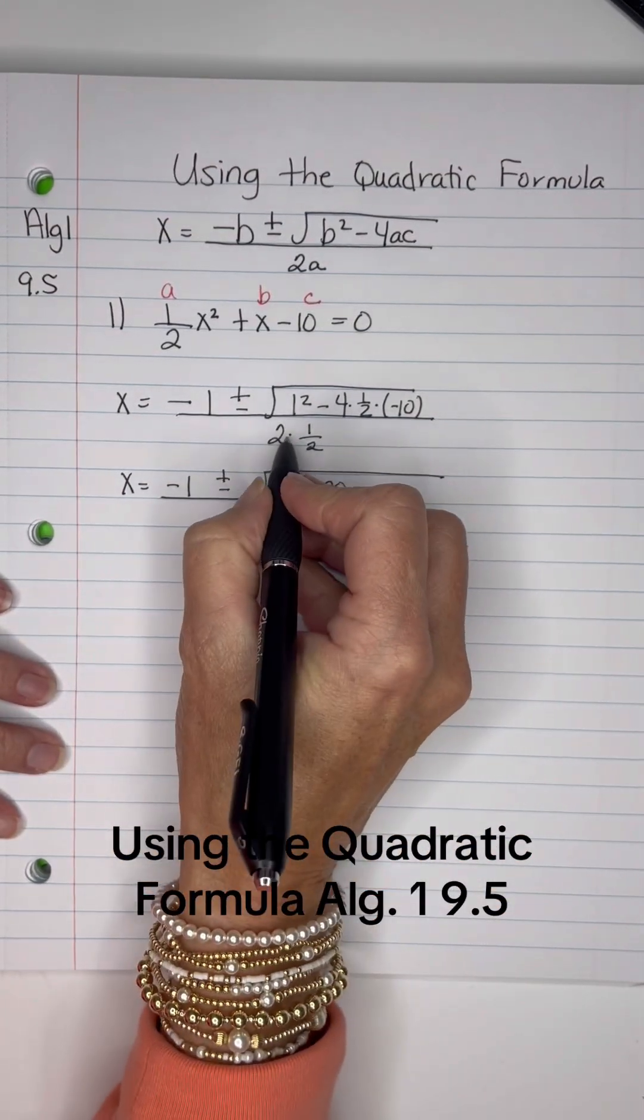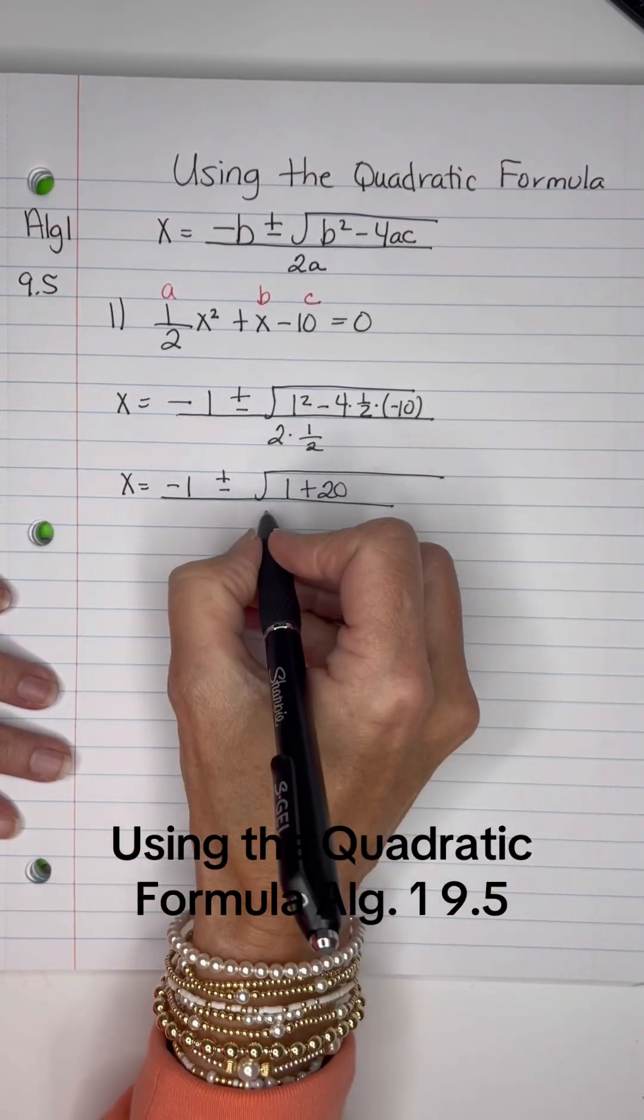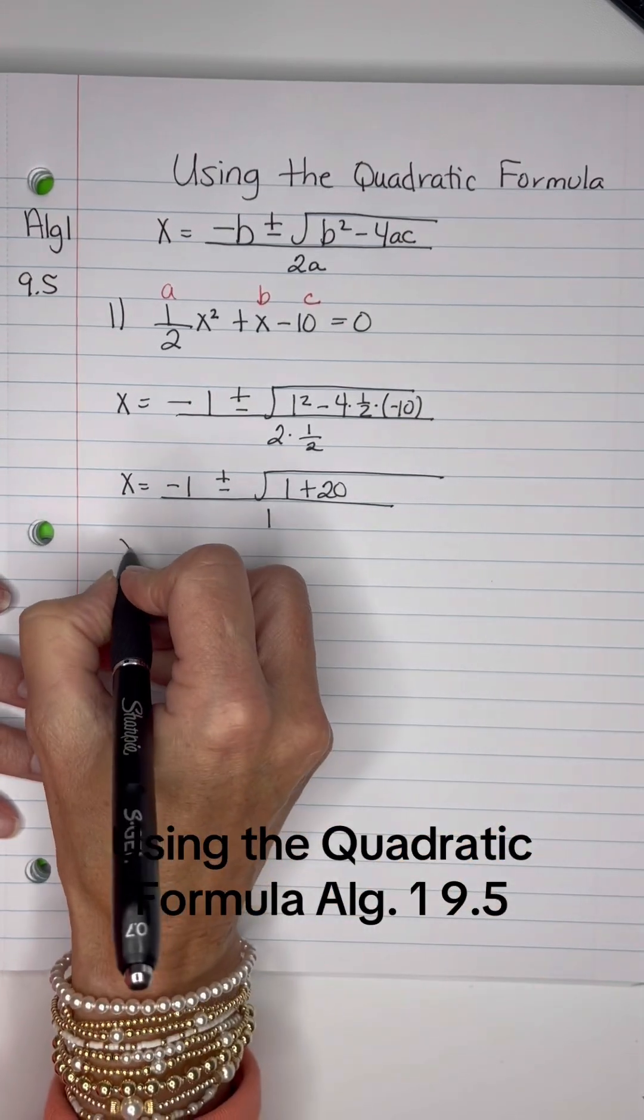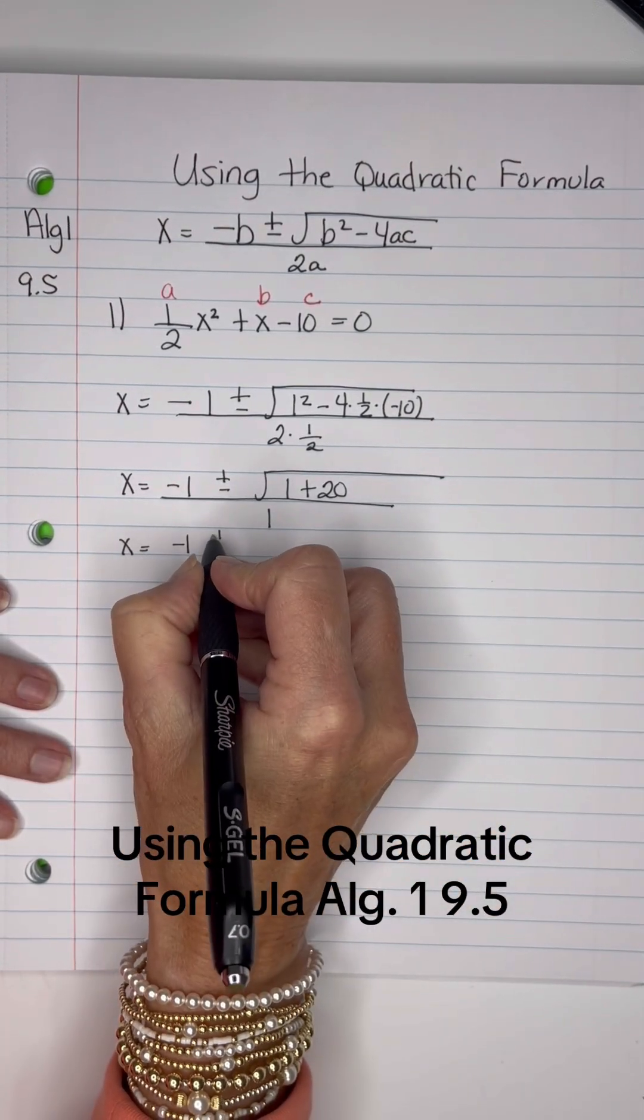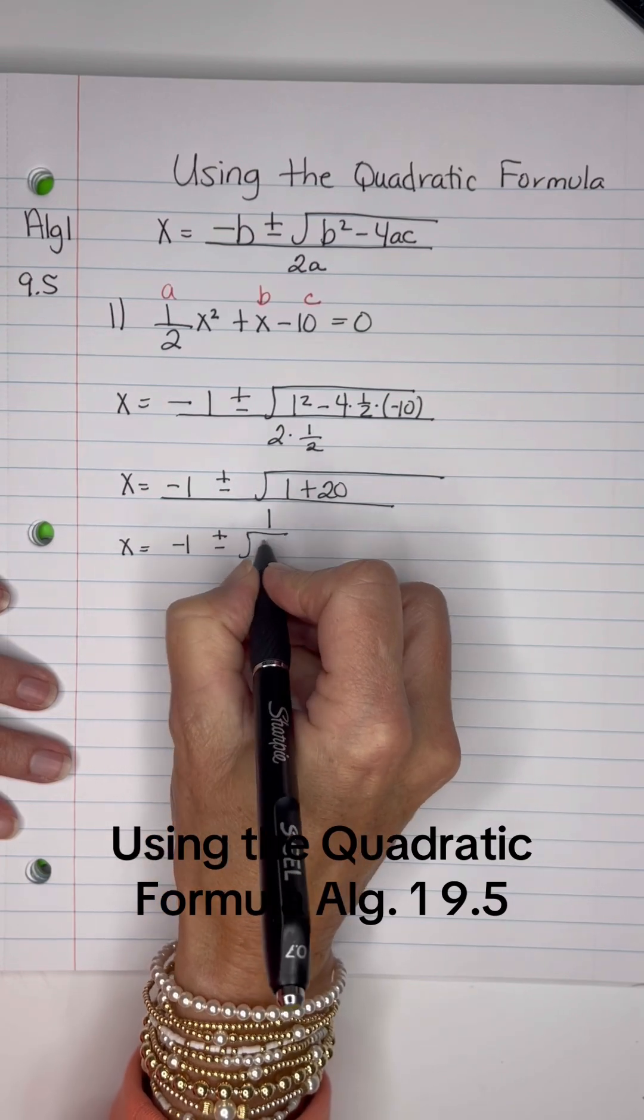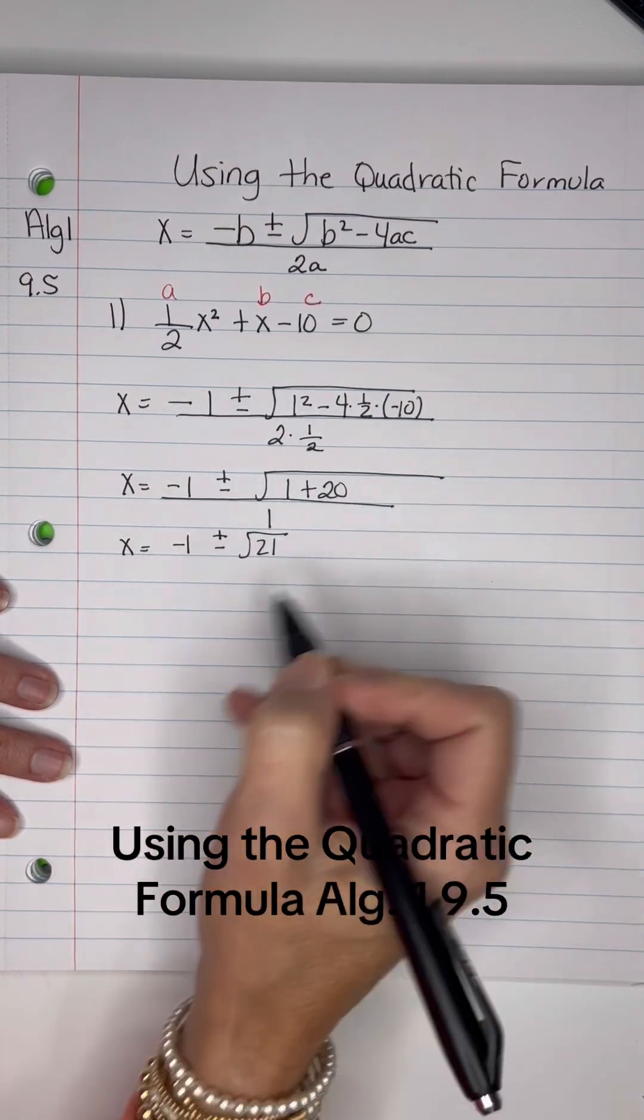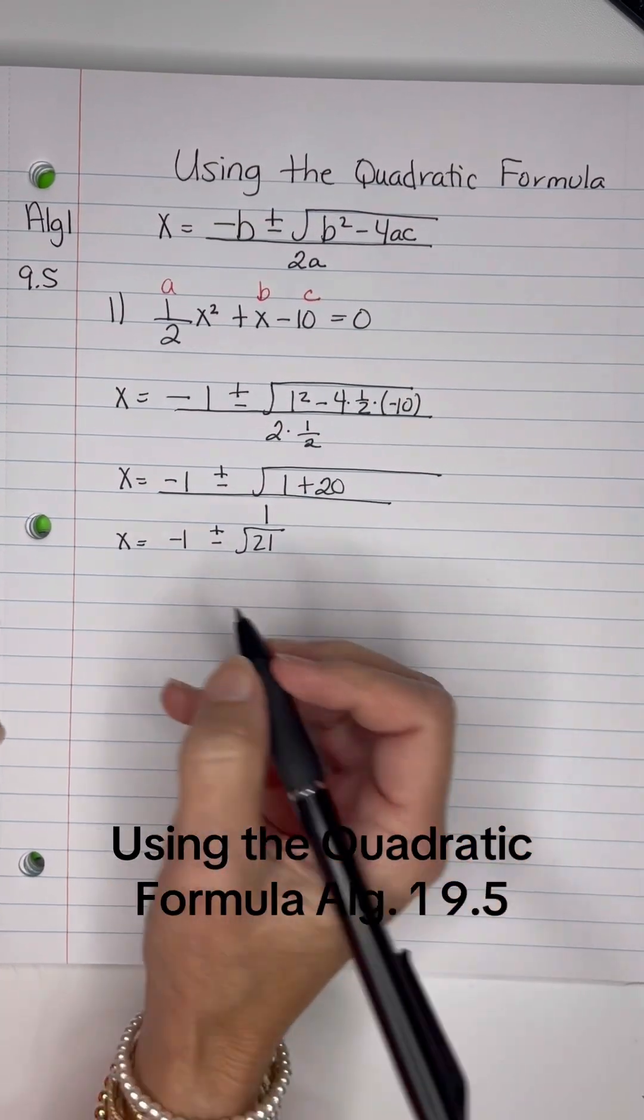All over 2 times 1 half, which means half of 2, which is just 1. So I have negative 1 plus or minus the square root of 21 and I'm not going to write the 1 down again.